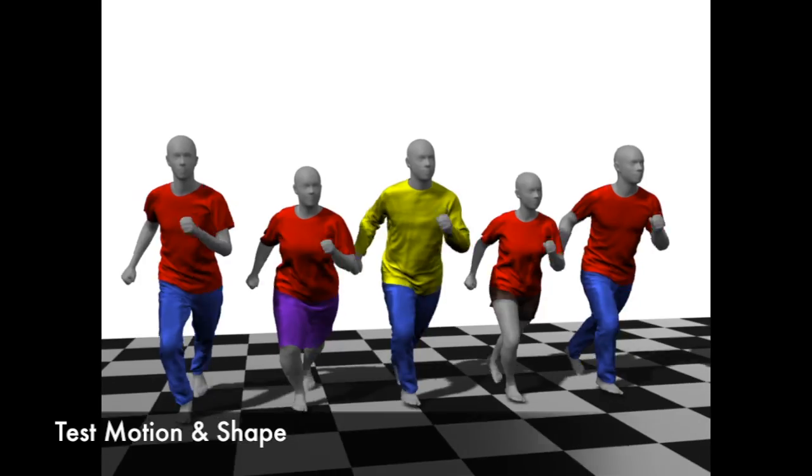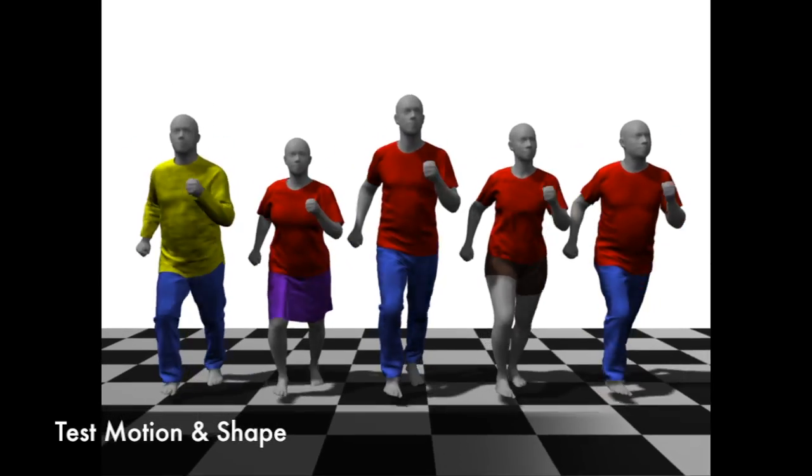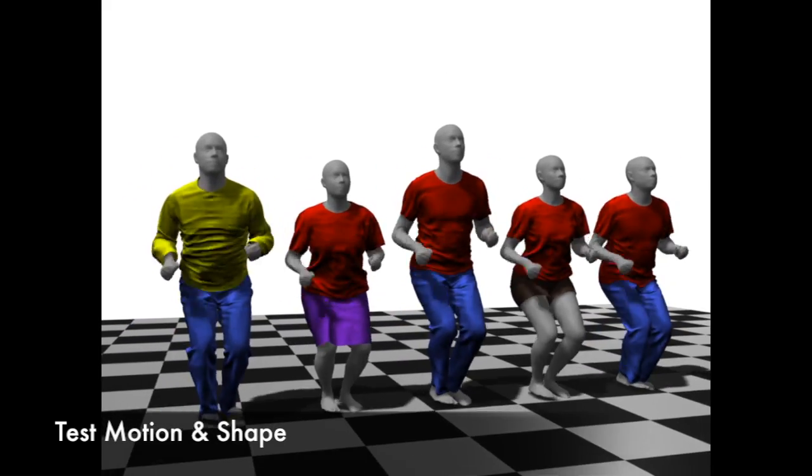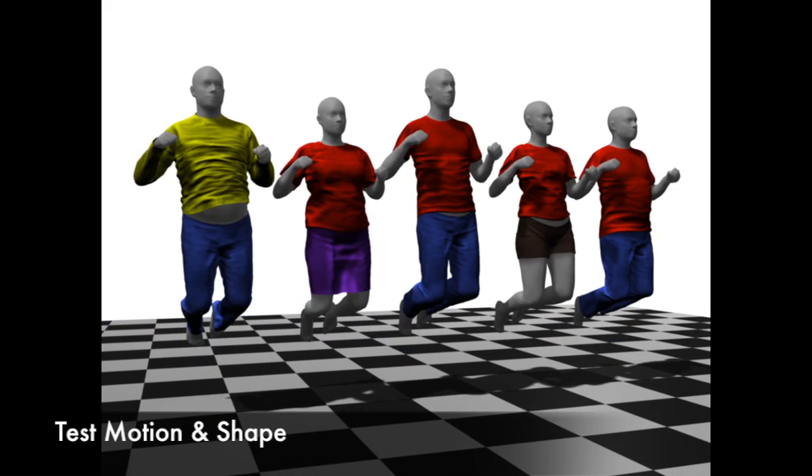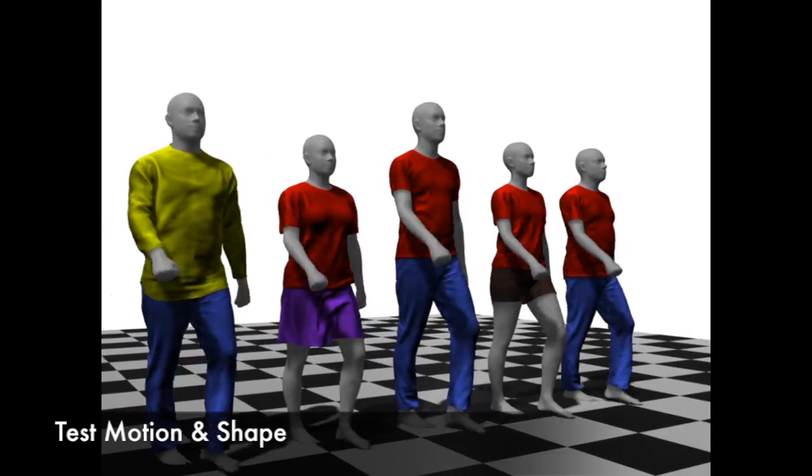We now show results where neither the body shapes nor the pose sequences appear in the training set. Note how drape realistically captures the dynamics of clothing during jumping.